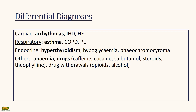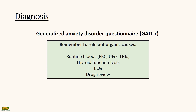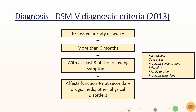For objective quantification of GAD, the generalized anxiety disorder questionnaire GAD-7 is often used, compared to the PHQ-9 questionnaire for depression. The official criteria for GAD diagnosis can be done through the DSM-5 or ICD-10 criteria.